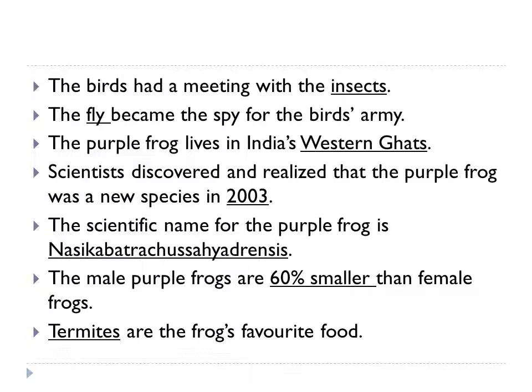The purple frog lives in India's Western Ghats. Scientists discovered and realized that the purple frog was a new species in 2003. The scientific name for the purple frog — students, I am really desperate to ask if you will be able to memorize the whole word. It's very easy if you try to bifurcate it or remember it with the vowels: Nasikabatrachus Sahyadrensis. The male purple frogs are 60% smaller than female frogs. Termites are the frog's favorite food.